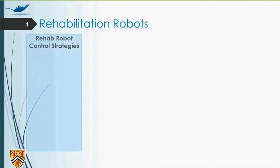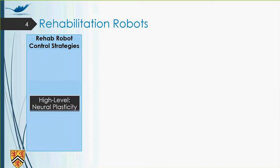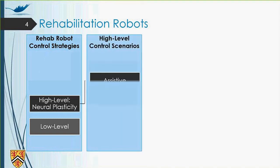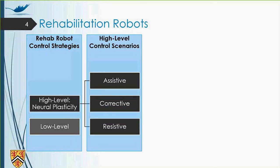Now, with this information that I've provided as the objective, let's see what are the different control strategies used for the rehabilitation robot. We can categorize the control strategies for the rehabilitation robots as the high-level ones, which are related to neural plasticity, and the low-level ones, which are used to implement the high-level control strategies. High-level control strategies consist of assistive, corrective, and resistive modes. Among these modes, assistive mode is more common in rehabilitation robotics.